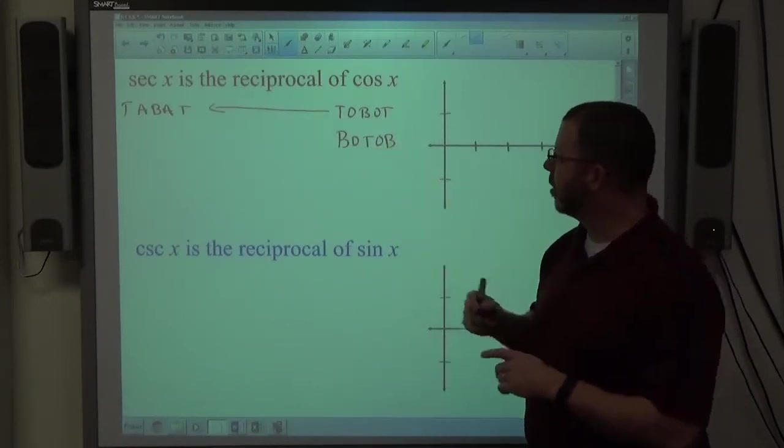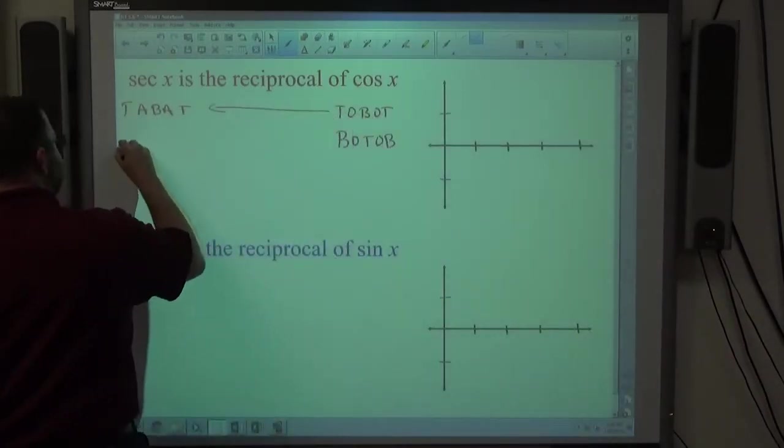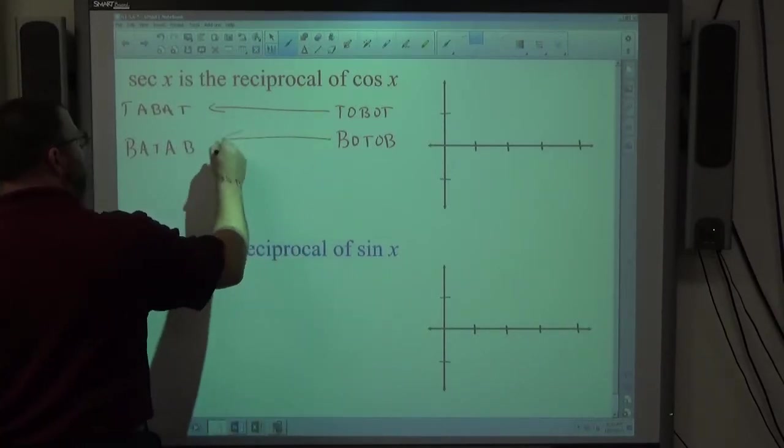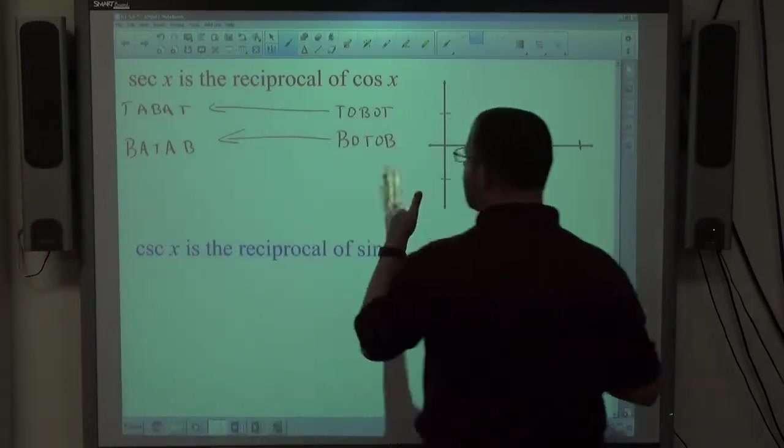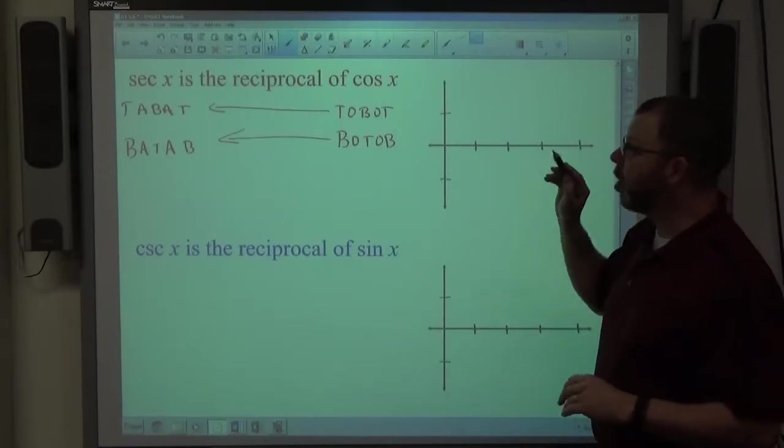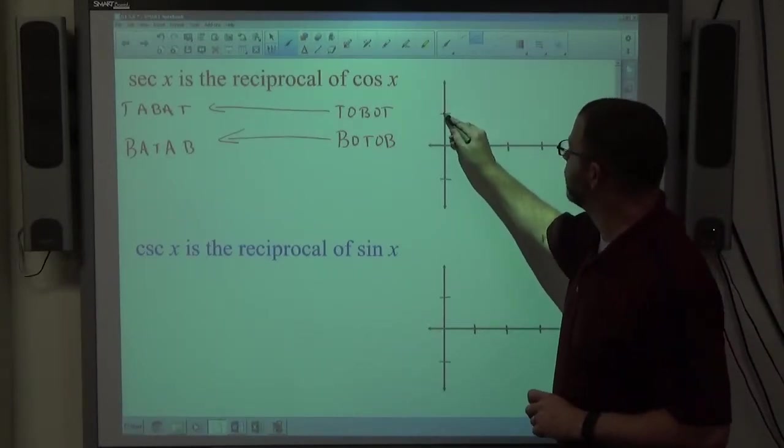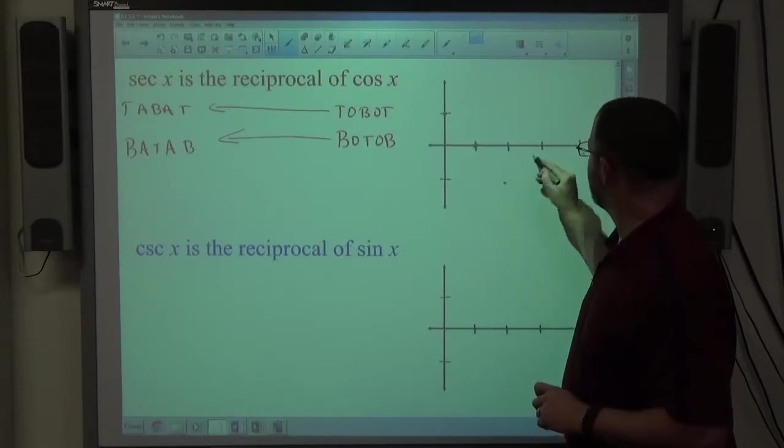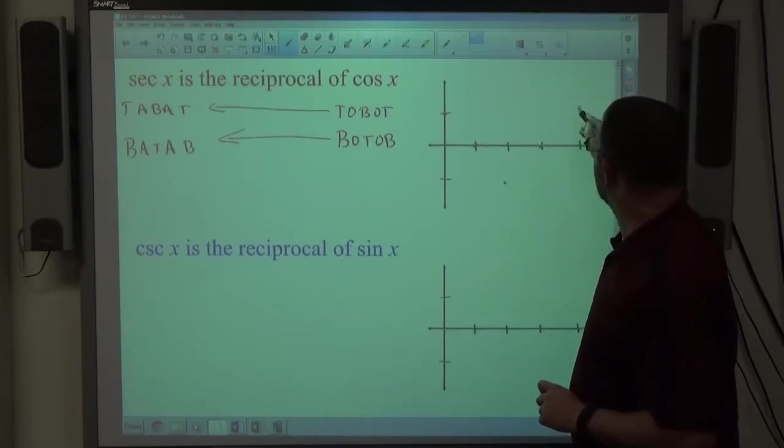The zeros change to asymptote, so bottom, asymptote, top, asymptote, bottom is the secant. So if I was just graphing, for example, a cosine graph, just to give you an idea. So this is the top, then zero, and then bottom, and then zero, and then top. So that's what cosine looks like.